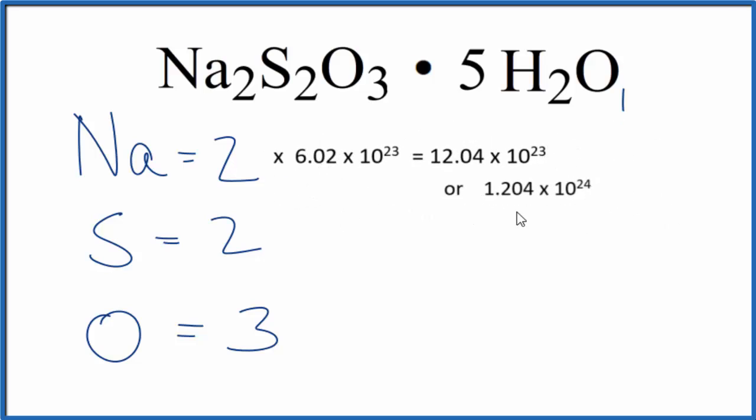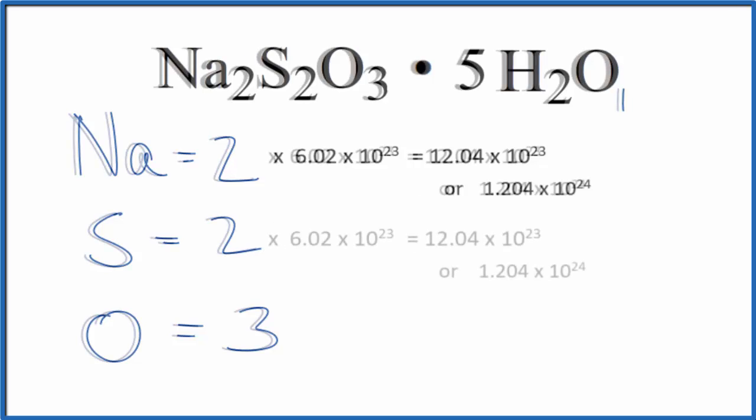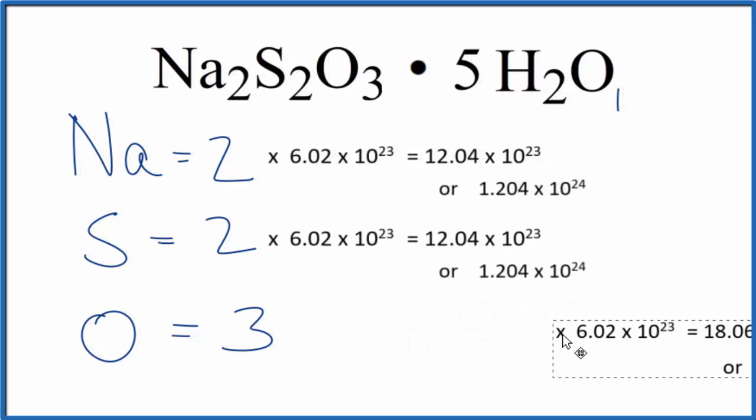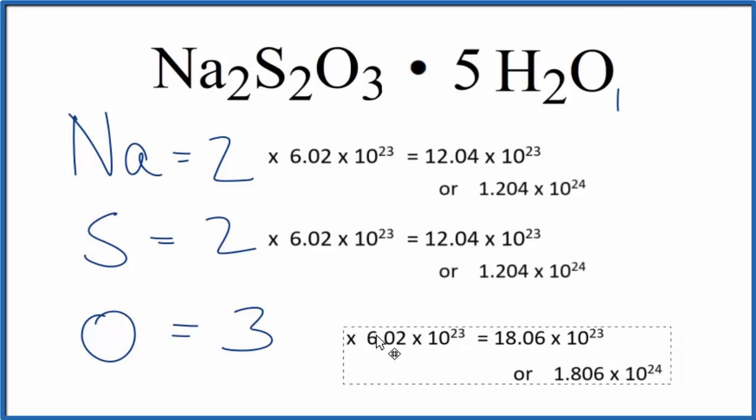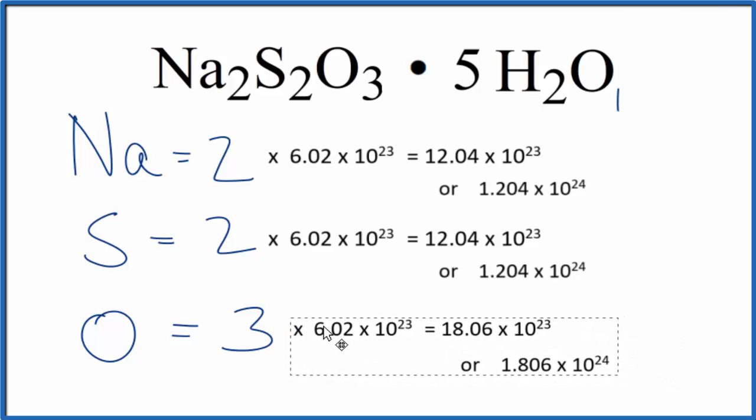will give us the number of sodium atoms in one mole of sodium thiosulfate pentahydrate. The sulfur would be the same thing since we have two. And for the oxygen, to figure out the number of oxygen atoms in one mole of sodium thiosulfate pentahydrate, we'd multiply three times Avogadro's number.